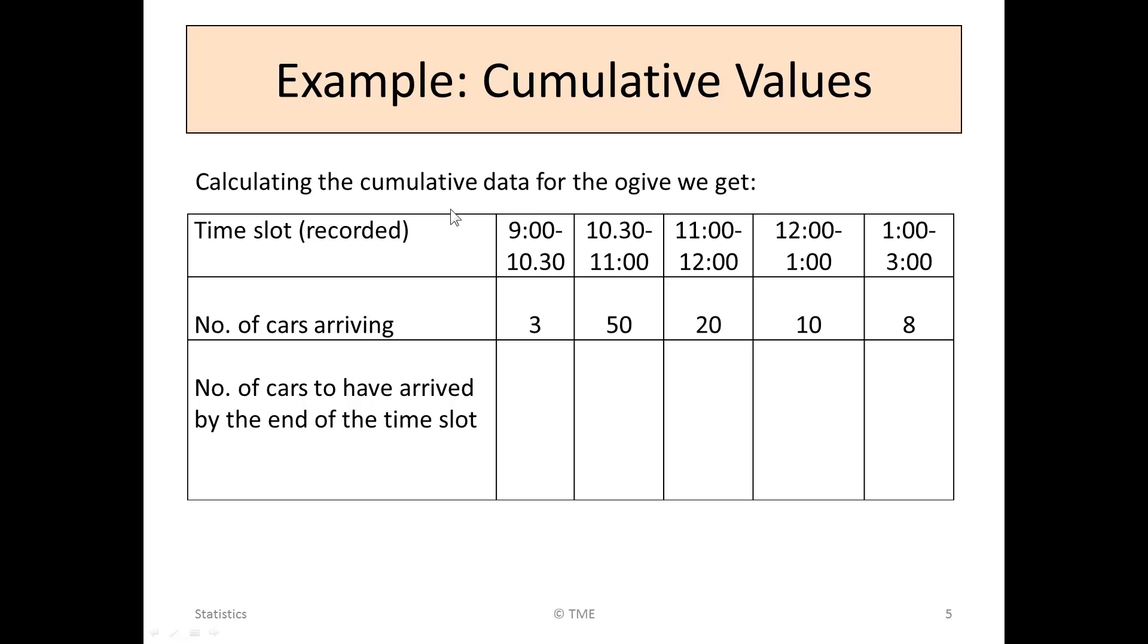We're now going to re-look at the table and use it to calculate the cumulative data for the ogive. Here's the time slot 9 to 10:30, where we had three cars. We don't know when they came in, but we know that by 10:30, all three cars were in. Similarly, if we go to 11 o'clock, we have an additional 50, so 50 plus 3, or 53 coming in. If we go to 12 o'clock, we're now adding the 20, the 50, and the 3. All three slots apply. They're all before 12, so a total of 73.